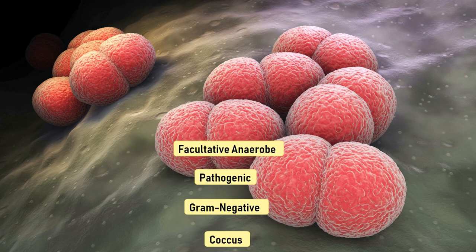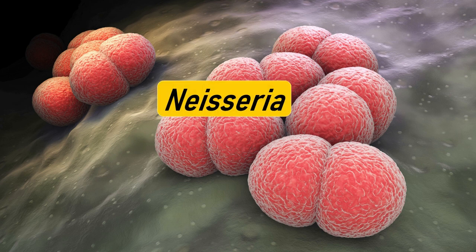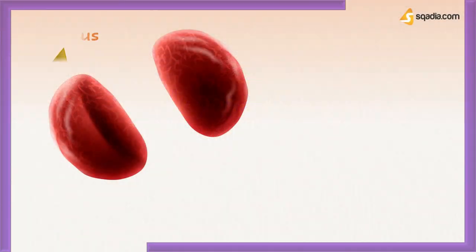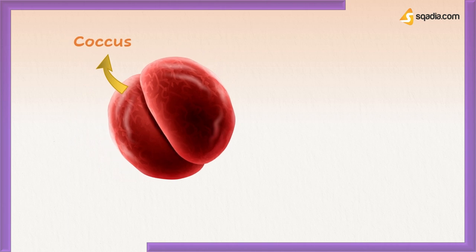While swimming in the pool of microbiology, it's time to examine a faculty of anaerobe, pathogenic gram-negative coccus: Neisseria, which does not like to roam around alone. It always hangs out in pairs, hence called Diplococci. Each member of the pair, called coccus, is shaped like a kidney bean, and sticks with its partner on adjacent flat or concave sides, making a small burger-shaped Diplococcus.